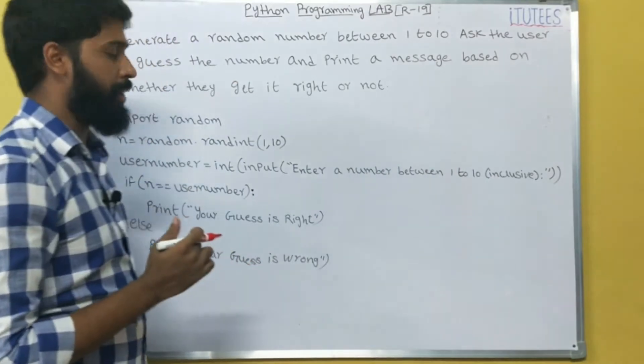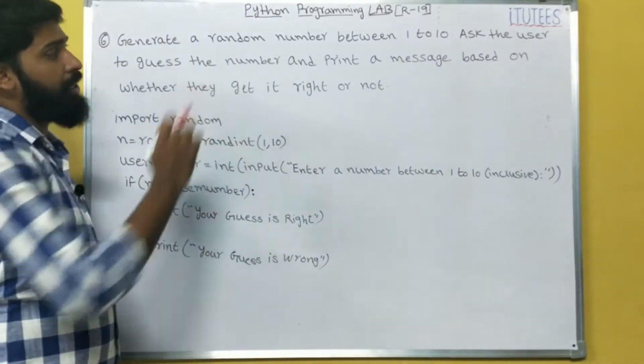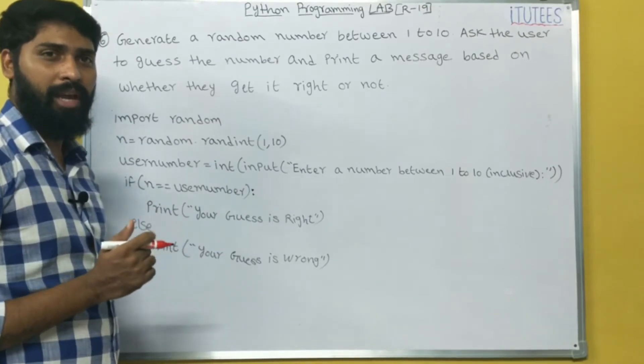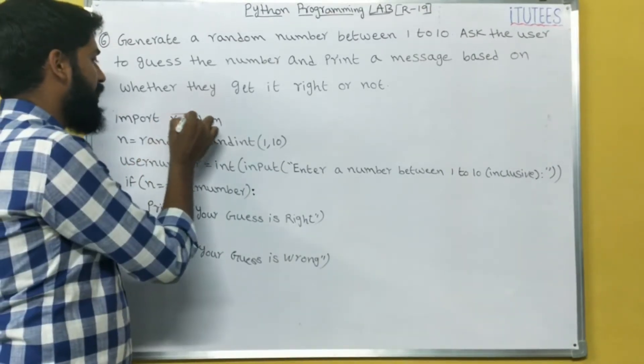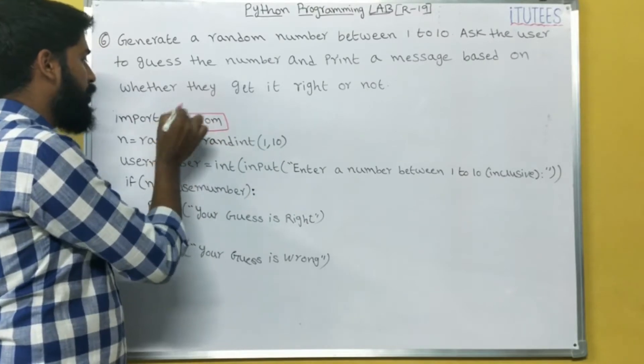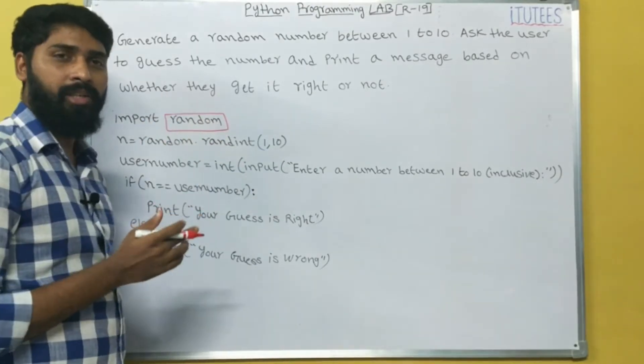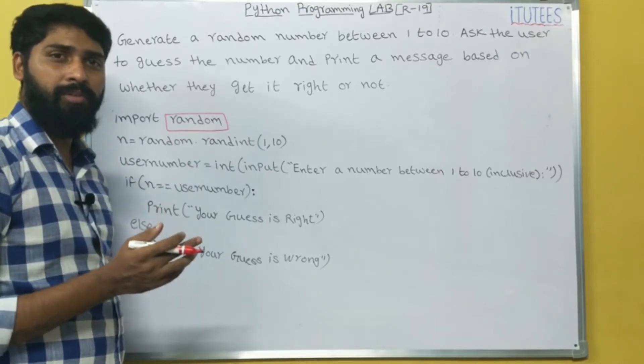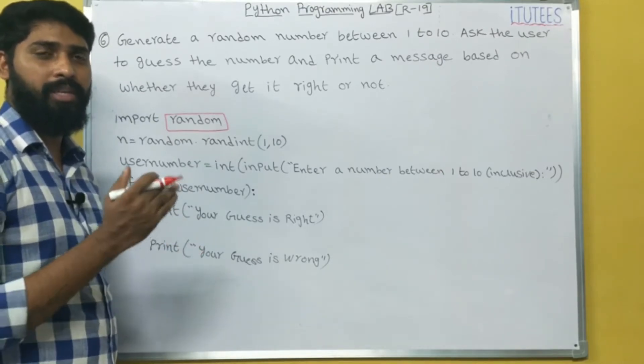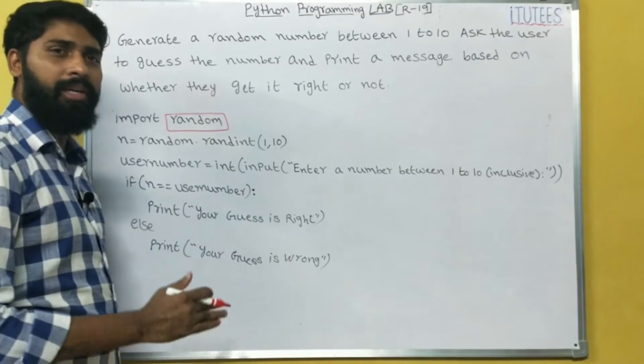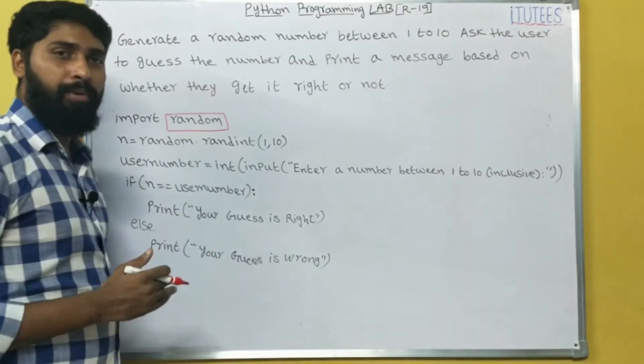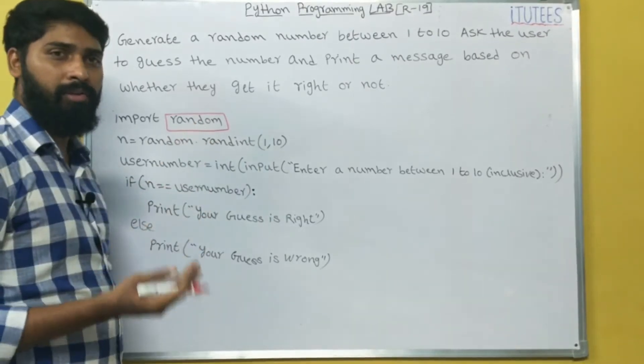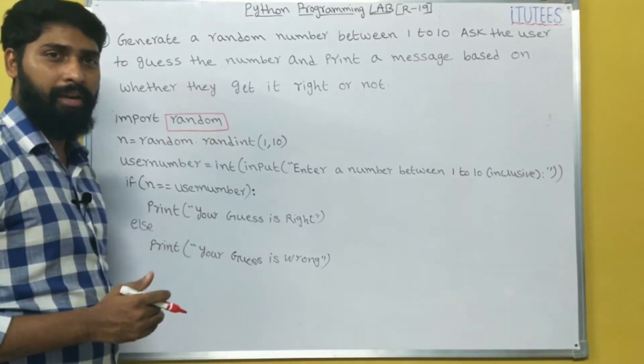Now we see the program. For random generation in Python there is a predefined module available. The module name is random. I hope you all know that hash include stdio.h in C, hash include iostream.h in C++. These are the header files. Similarly, in Python we can import the predefined modules. The random is the predefined module. It generates random numbers.